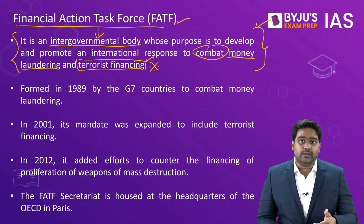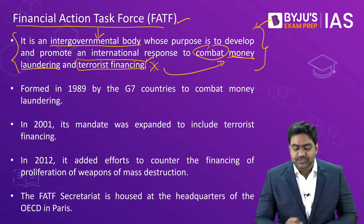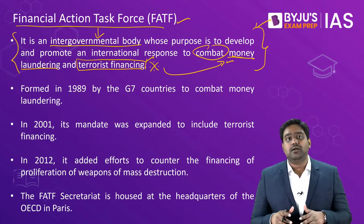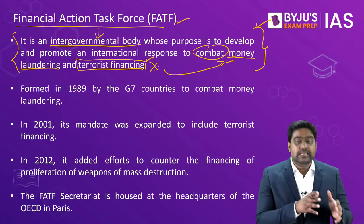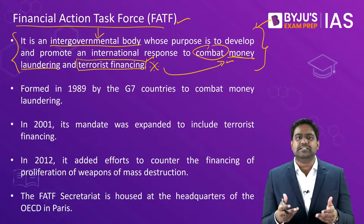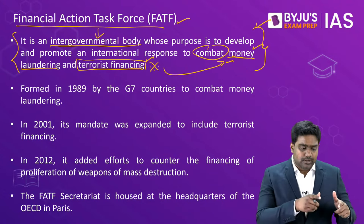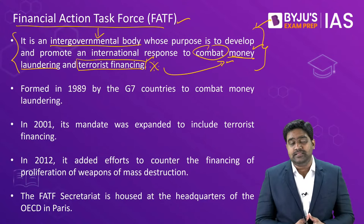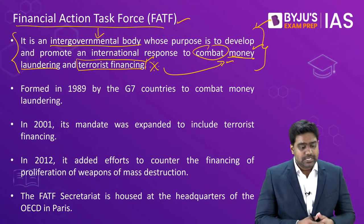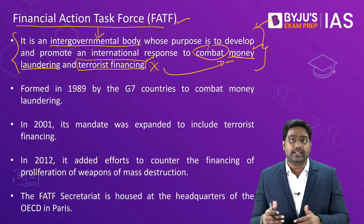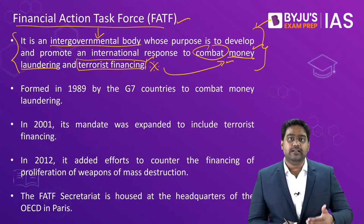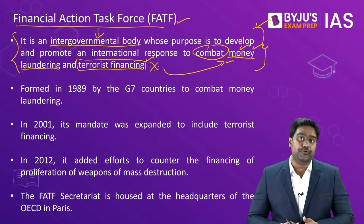Terror financing is usually done through money laundering channels. Money laundering is nothing but a process through which illegal wealth is converted into legal wealth — that would be a very simplistic definition. Essentially, the black money or illegally acquired wealth is cleaned of its illegal sources and turned into legal wealth or clean money. This process of cleaning dirty money is referred to as money laundering.